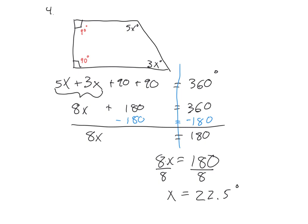Now if it asks you to find the angle measurements, I'd have to go back up here, and this is 5x, so it's going to be 5 times x, which would be 5 times 22.5. So that angle would be 112.5 degrees. This one down here is times 3, so 22.5 times 3. That one would be 67.5 degrees. I think it just asked for x. That'll do it.